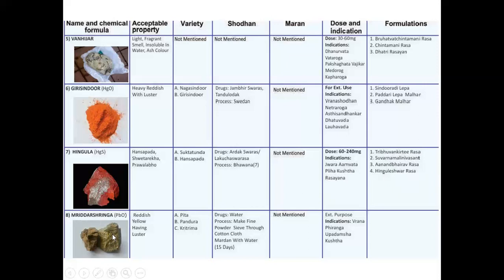The eighth Saadharana Rasa is Mriddharashrindha — PBO — reddish yellow, having luster. Types are Pitha, Pandura, and Krittrima. For Shodhana, water is used — make fine powder, sieve through cotton cloth, and Mrdhana with water for 15 days. Marana is not mentioned. It is used for external application for wounds — Vrana. Indications: Firanga and Upadhamusha — venereal diseases like syphilis and gonorrhea — and Kushtha — many skin diseases.